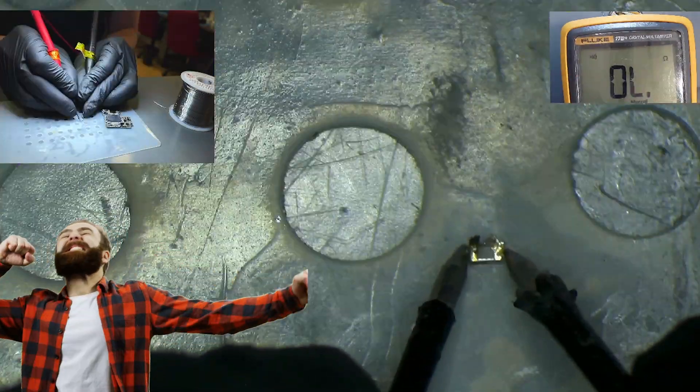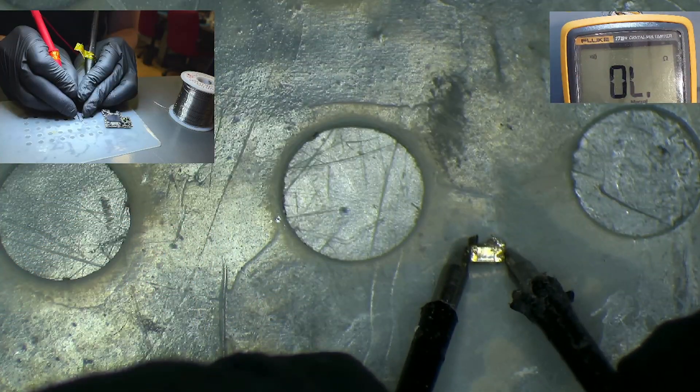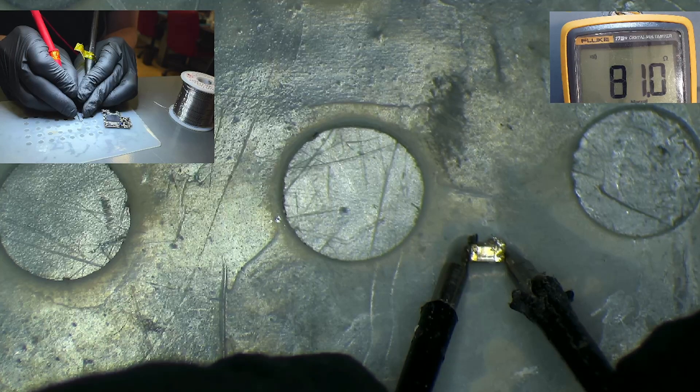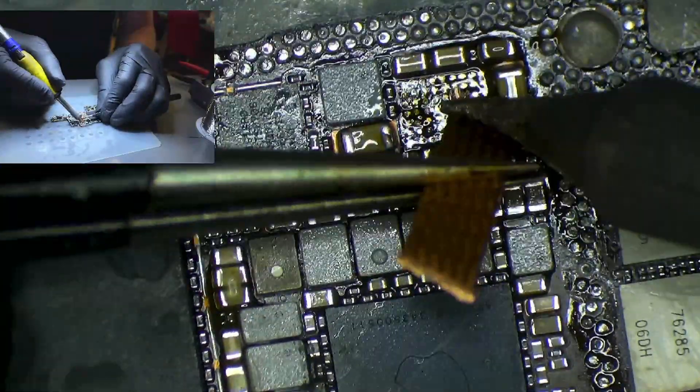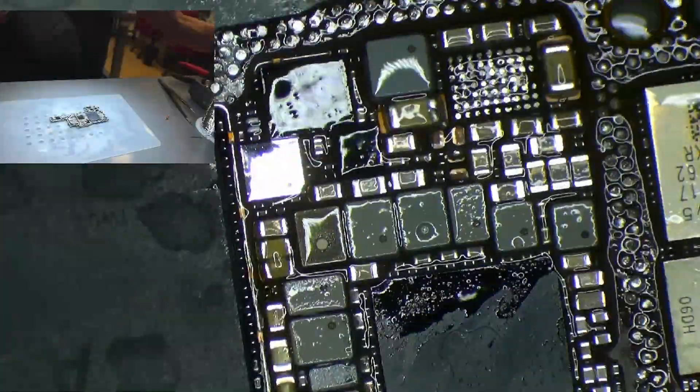As you can see, when we test this capacitor, we see that it has continuity when the multimeter makes a beep sound. A good capacitor should not have continuity from side to side, so this was the shorted capacitor.